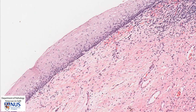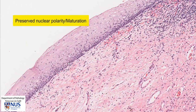As the epithelium moves towards the superficial layers, the nuclei become more flattened, and the NC ratios are a lot lower because there's a lot more cytoplasm. So we have high NC ratios in the basal layers normally and low NC ratios in the superficial layers. This kind of gradation in appearance is known as nuclear polarity, and there is preserved nuclear polarity here.